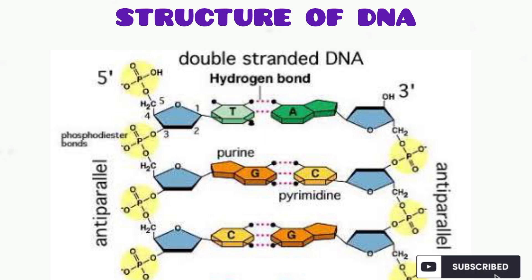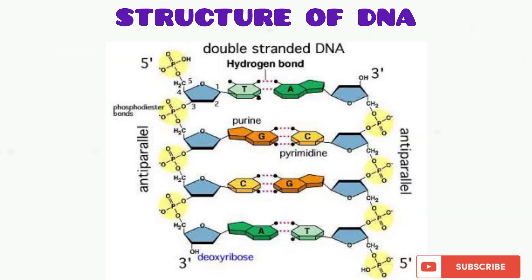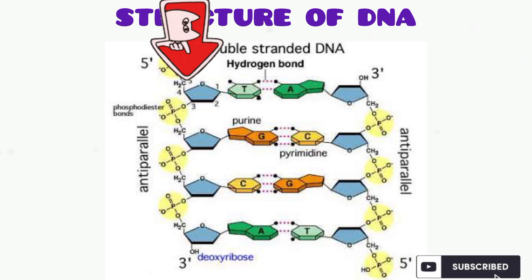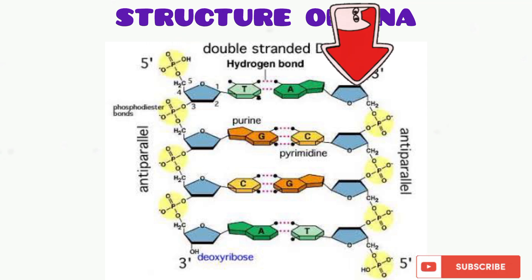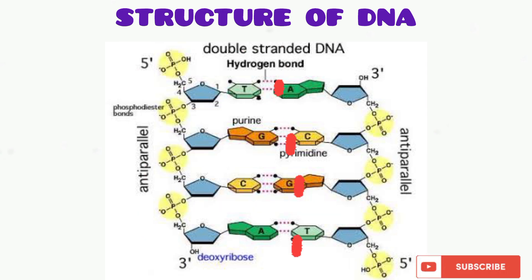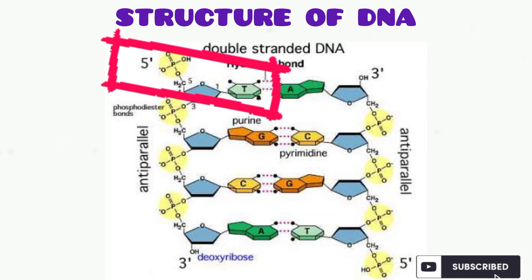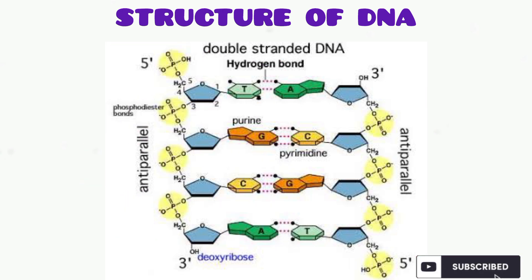Now let's explain the full DNA structure. As you can see on your screen, the DNA structure is made up of two strands of polynucleotides — this is one strand and this is the second strand. Polynucleotide means each strand is made up of many nucleotides. There are four nucleotides shown in each strand here, though in real DNA there are many more.